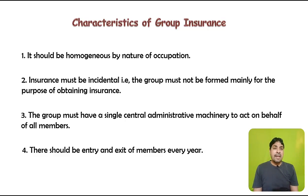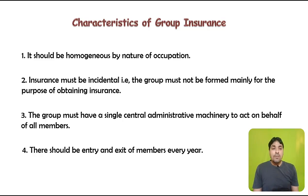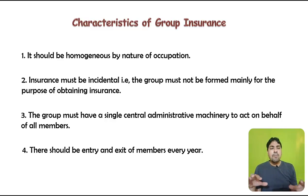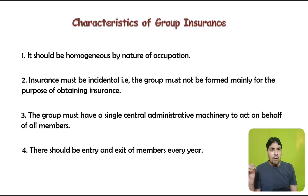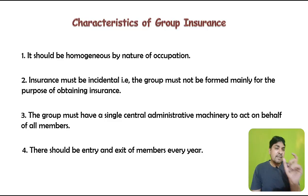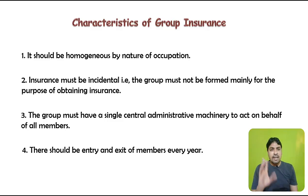The fourth characteristic is that there should be entry and exit of members every year. In a law college, members will not all be of the same age — some will retire and new appointments will be made, so members keep coming and going. This continuous flow of members is also an essential characteristic of a group insurance contract.